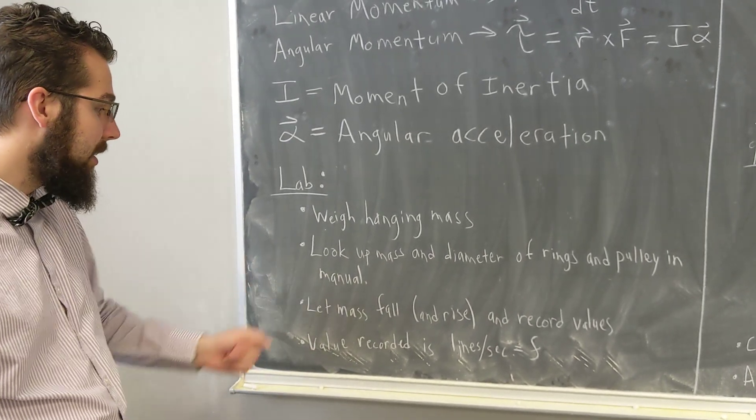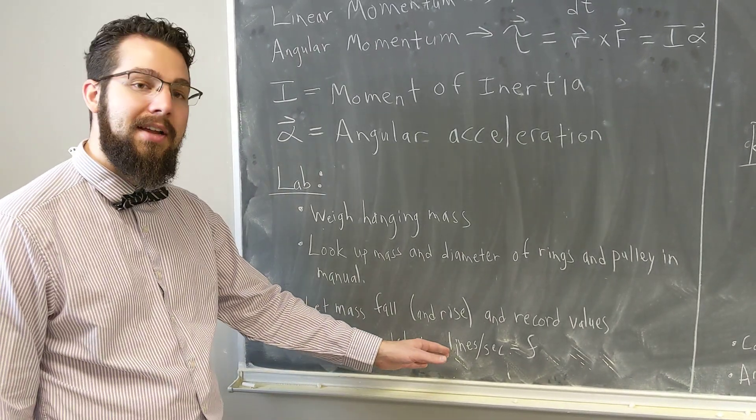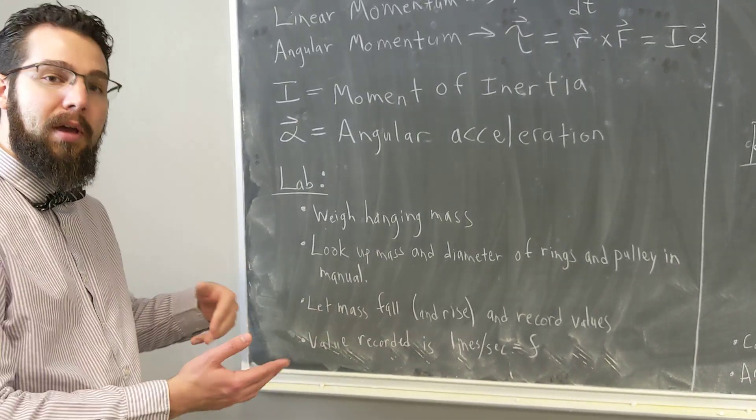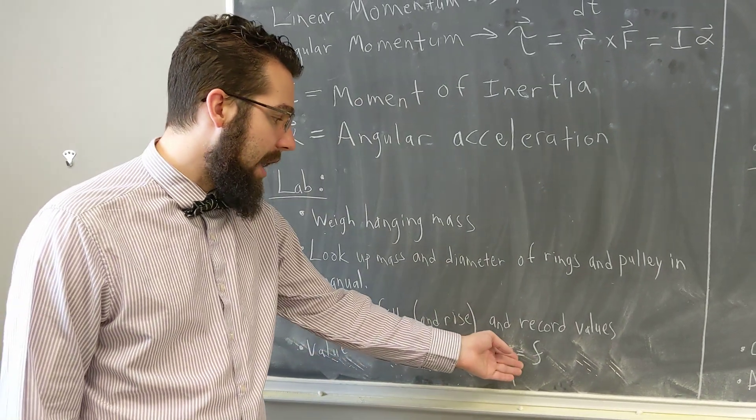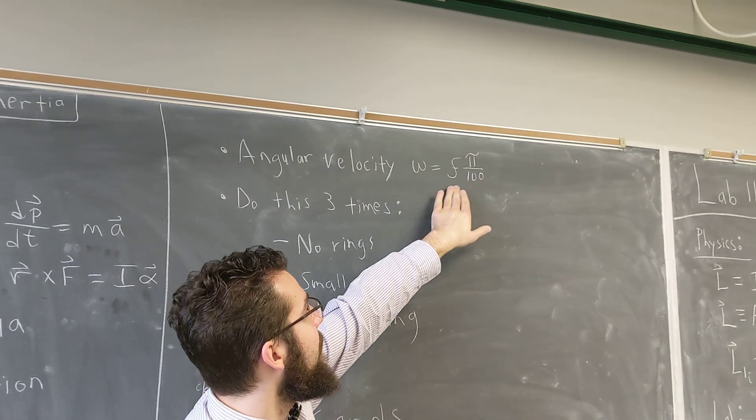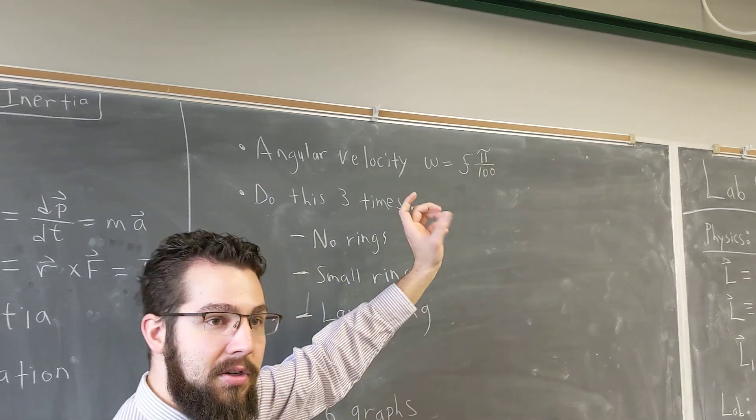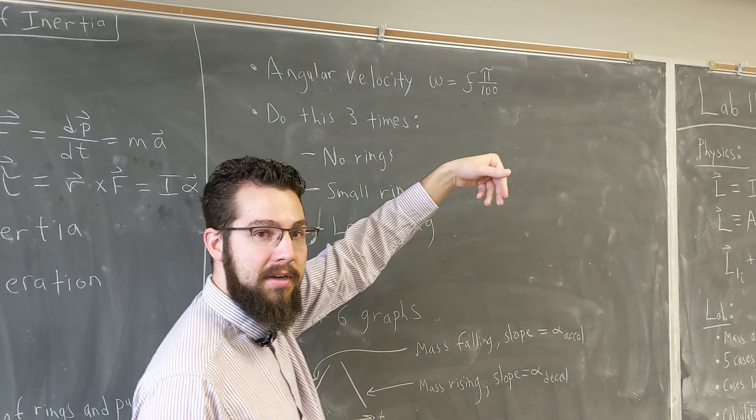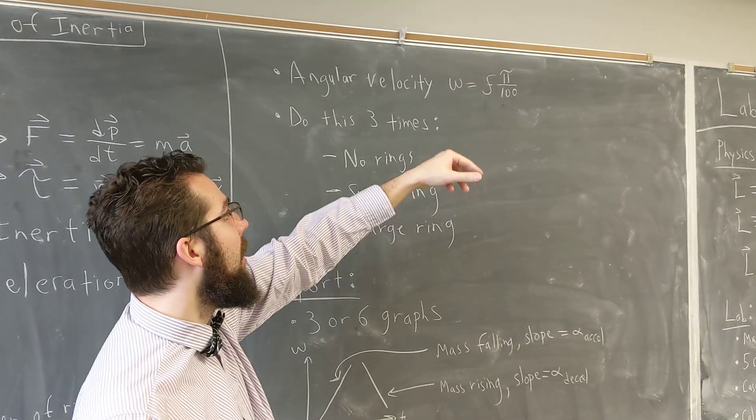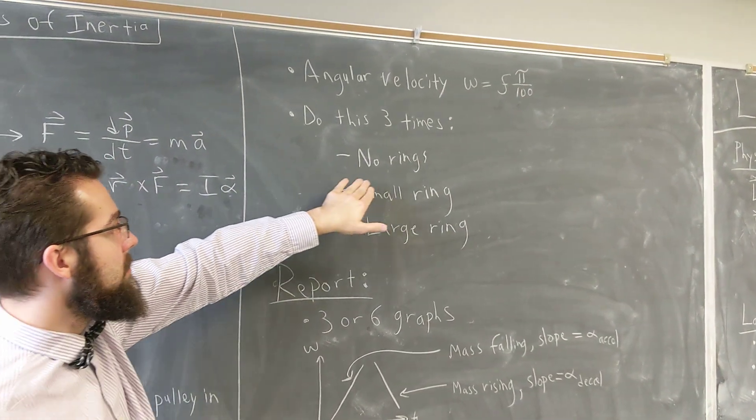We'll see how well those two correspond. We'll let our mass fall and rise, and as it falls and rises we'll record the lines per second, which will make sense when we look at the apparatus. That will tell us F, which corresponds to angular velocity omega, which will be F times pi over 100. We get this from there being 2π radians in a circle and 200 lines on the disc, so π over 100 times lines per second gives us how fast our disc is rotating.